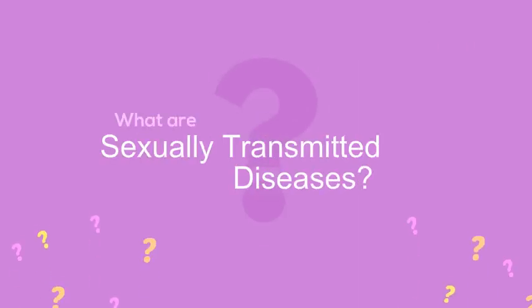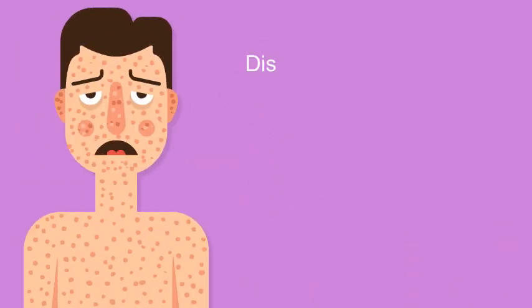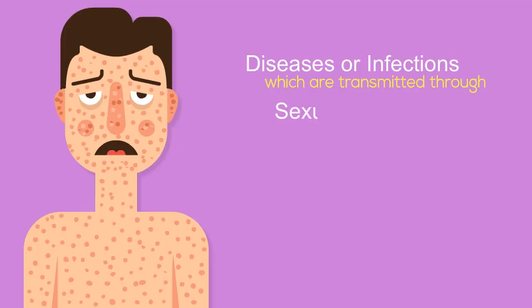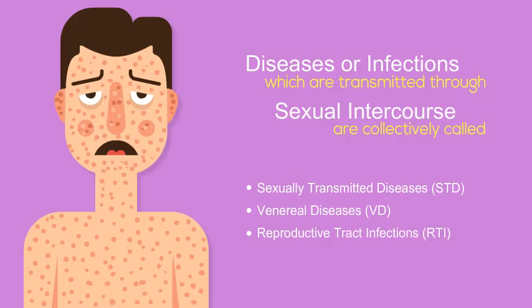So exactly what are sexually transmitted diseases? Diseases or infections which are transmitted through sexual intercourse are collectively called sexually transmitted diseases, STD, or venereal diseases VD, or reproductive tract infections RTI.